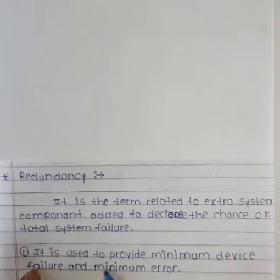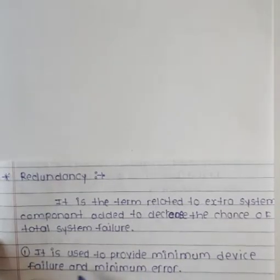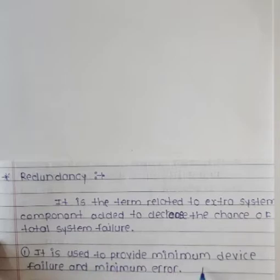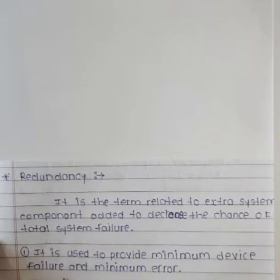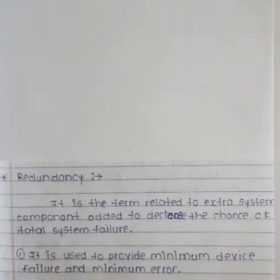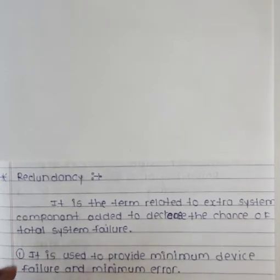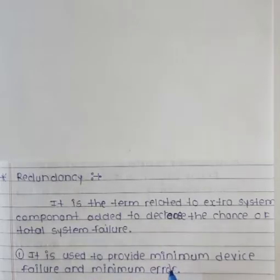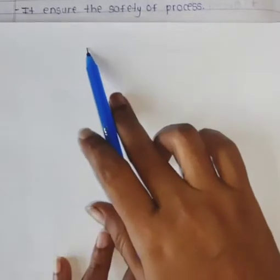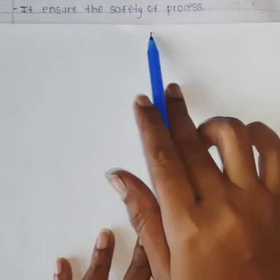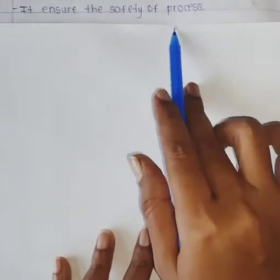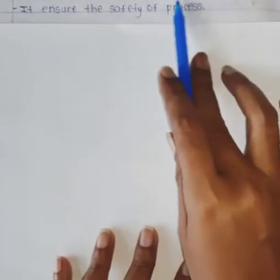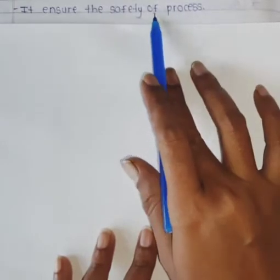First, it is used to provide minimum device failure and minimum error. Yeh kya karta hai? Minimum device failure provide karta hai, means minimum failures hote hain iski wajah se aur minimum errors bhi rehte hain. Next point: it ensures the safety of process. Means iski wajah se jo bhi hamari process hai, woh safely hoti hai.